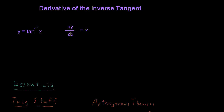In this video, we are going to find the derivative of the inverse tangent. The inverse tangent can be written two ways. I've written it here as y equals the inverse tangent of x. I could have just as easily written it this other way, which is equivalent: y equals the arctangent of x. It means the exact same thing.